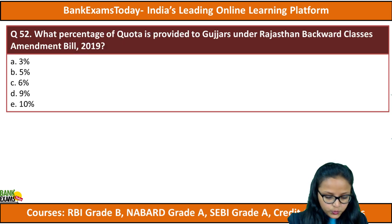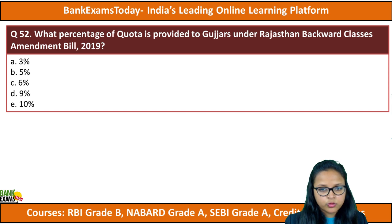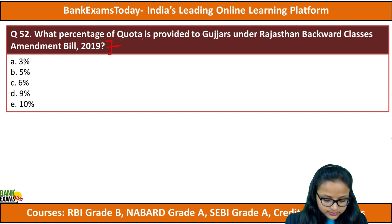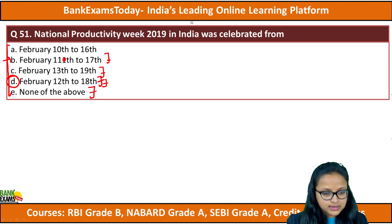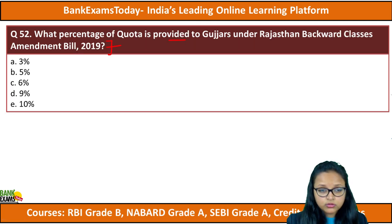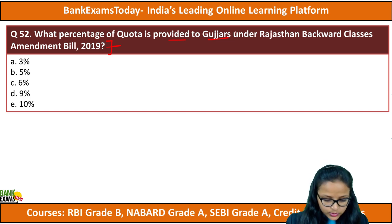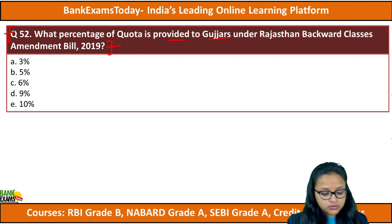Question number 52: what percentage of quota is provided to Gujars under the Rajasthan Backward Classes Amendment Bill? The Rajasthan government has recently decided to provide quota to the Gujjar community. What is the percentage of quota provided to them in government schemes and institutions? I would really appreciate if everyone watching this video participates — it would be very helpful for you to revise the current affairs of February 2019.